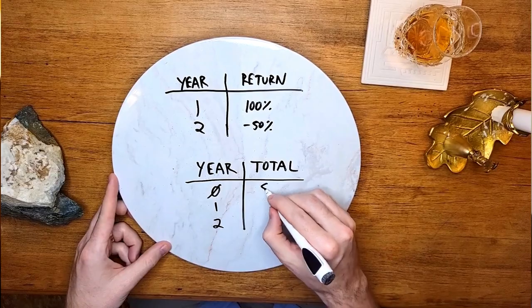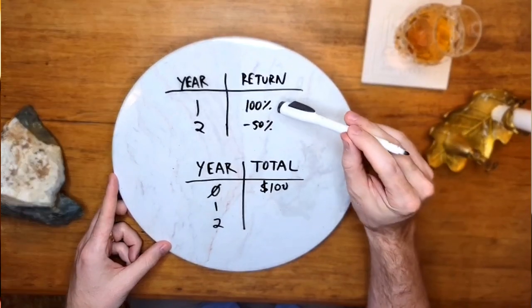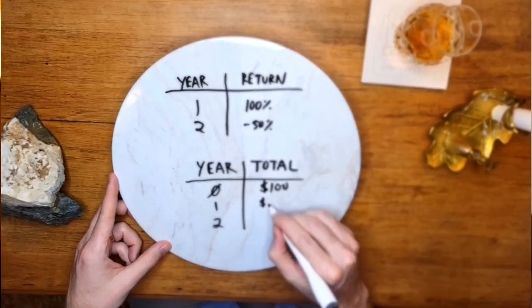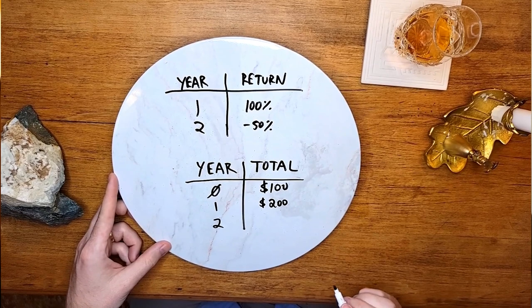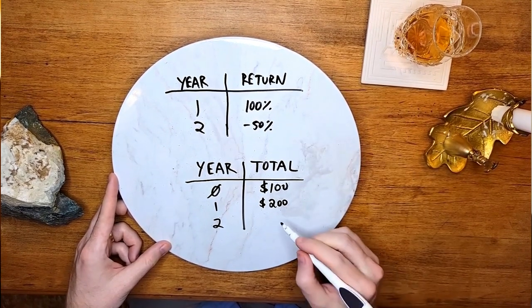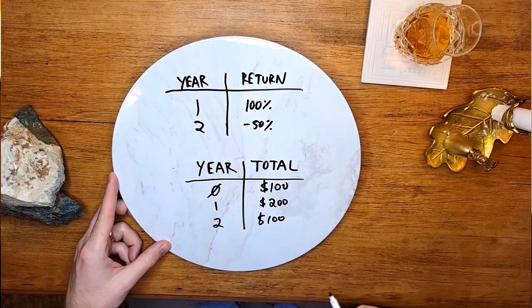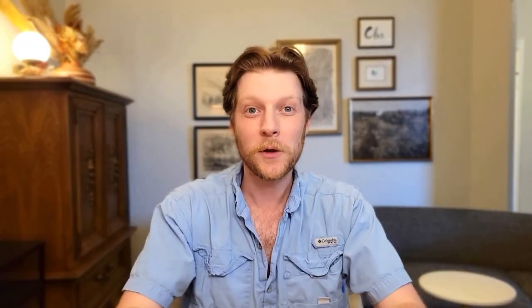If we look at how this actually plays out, you end up making $0 after two years. Say you start out with $100. After that 100% return, you go up to $200. Should have sold then, because after losing 50% the next year — 50% of $200 — you're back down to your starting point, $100. This perfectly illustrates what I said earlier: a higher average return does not necessarily get you more profit. If you had put your money in a high yield savings account instead for two years with an average return of just 3%, you would have profited about $6 over the two years.